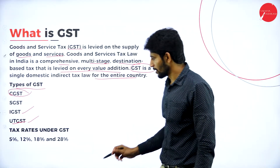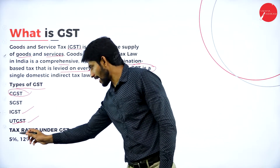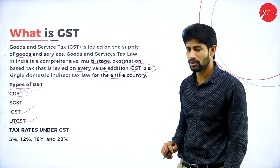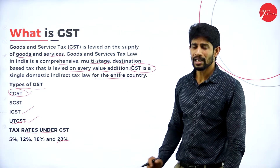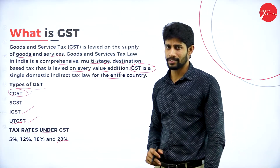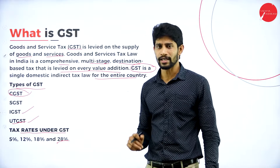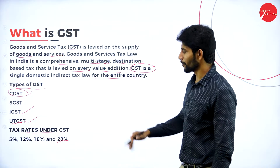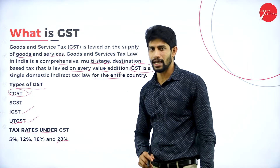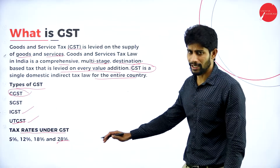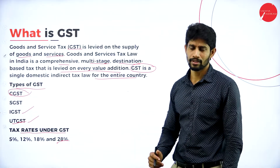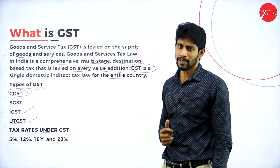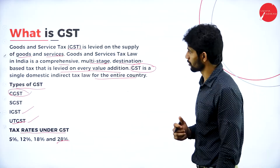Under GST, we have four slab rates: five percent, twelve percent, eighteen percent, and twenty-eight percent. The applicable rate depends on the particular goods or services being supplied.